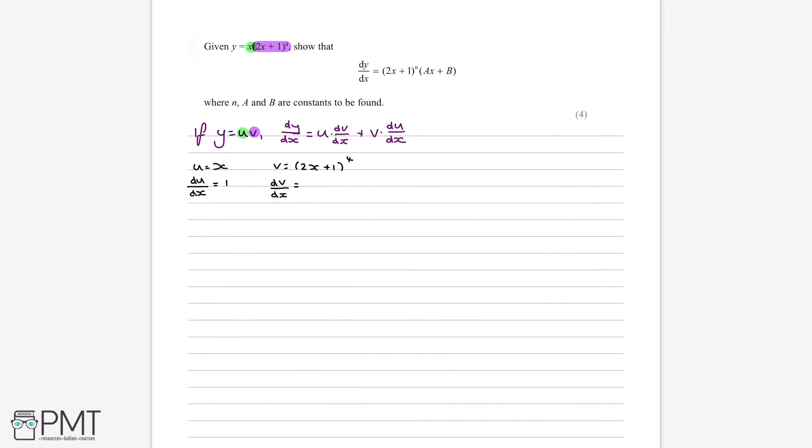we now need to use the chain rule. The chain rule states that we need to bring forward this power in front of the bracket. So we bring forward the 4 and multiply it by the 2x plus 1. And then we take away 1 from the power, just like you would in normal differentiation, so it's to the power of 3. And then we multiply it by the differential of what's inside the bracket, the differential of 2x plus 1, which is 2. And so we can write this a bit more simply, it's 8 multiplied by 2x plus 1 to the power of 3.